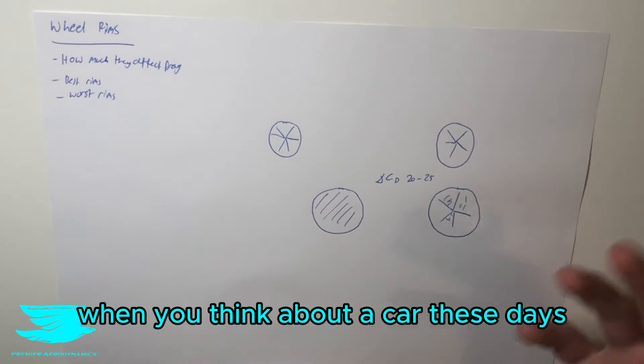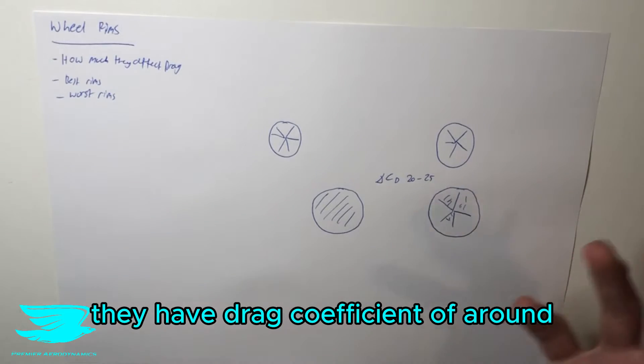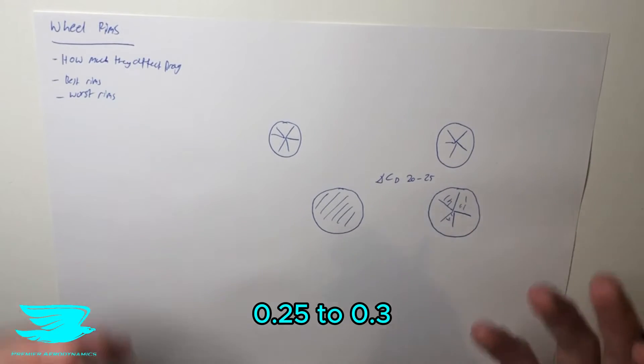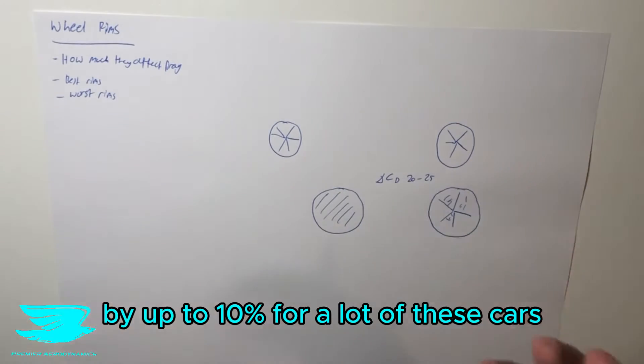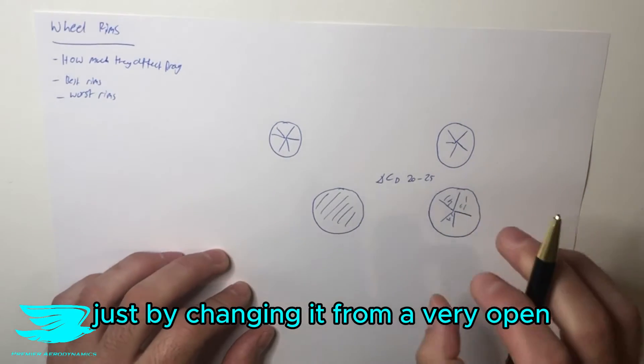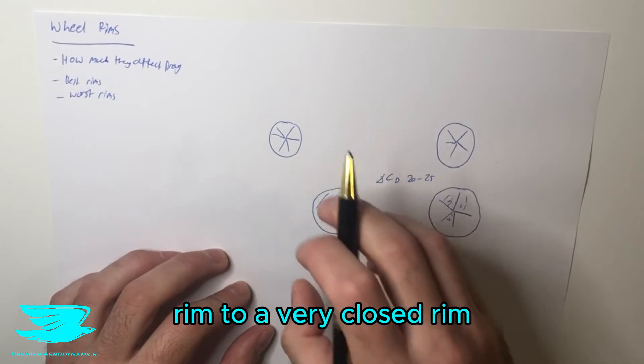So that's quite a lot when you think about a car these days - their drag coefficient is around 0.25 to 0.3. So you're actually reducing the drag by up to 10% for a lot of these cars just by changing from a very open rim to a very closed rim.